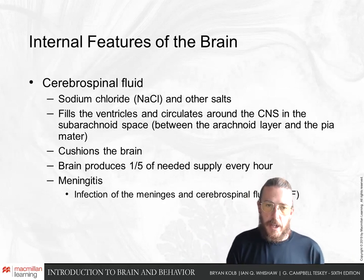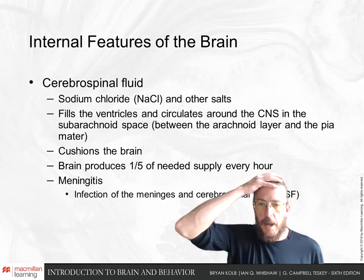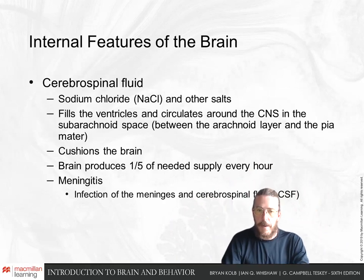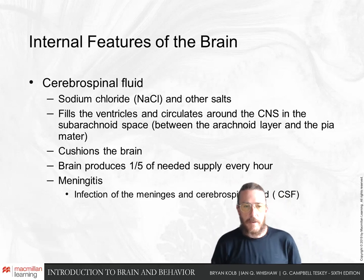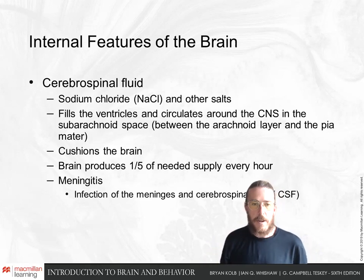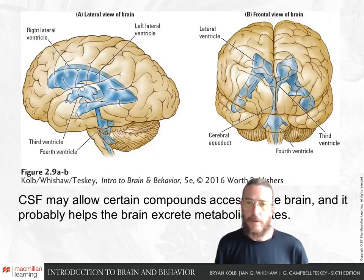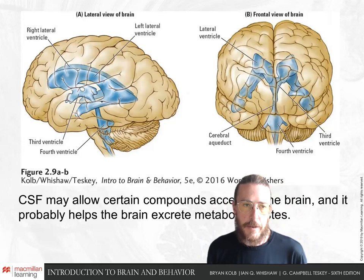Cerebrospinal fluid fills the ventricles and subarachnoid space, cushioning the brain like a bath. Our brain constantly produces this fluid; it leaks out through the veins in the subarachnoid space, and we make about one-fifth of the needed supply every hour. We can get an infection of the meninges and cerebrospinal fluid called meningitis, whose primary onset symptoms are a very stiff neck and headache. Inside the third ventricle would be the thalamus, with a fourth ventricle traveling down the brain stem.